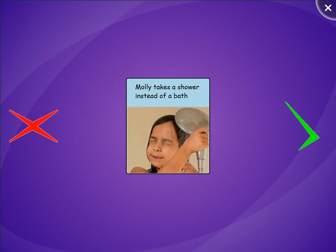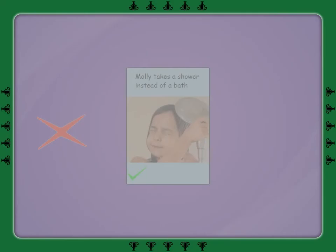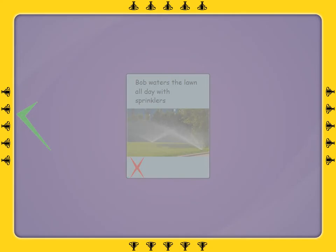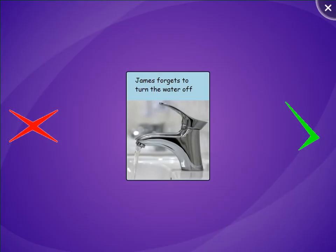Molly takes a shower instead of a bath. Bob waters the lawn all day with sprinklers. James forgets to turn the water off.